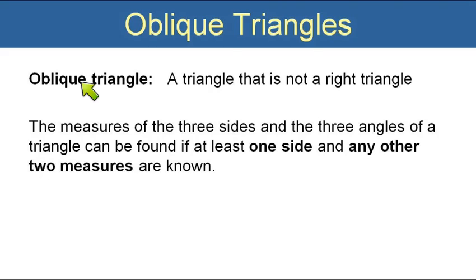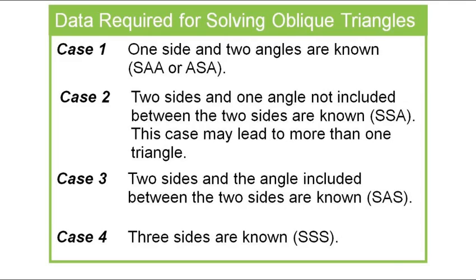An oblique triangle is any triangle that's not a right triangle. The measures of three sides and three angles of a triangle can be found if at least one side and any other two measures are known. Our book breaks the triangles down into cases. Case one is when we know one side and two angles. If that happens it's either SAA or ASA. Whenever we have a case one scenario we use the law of sines.